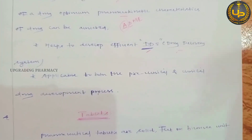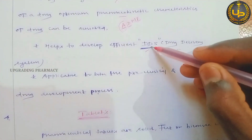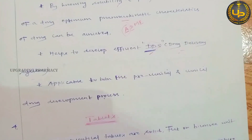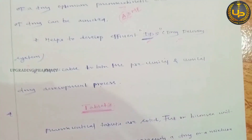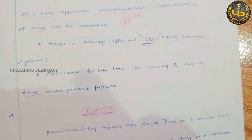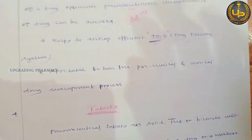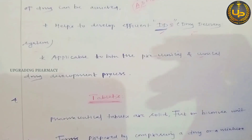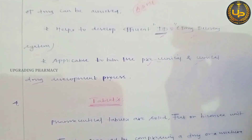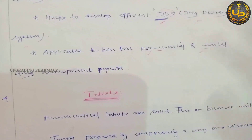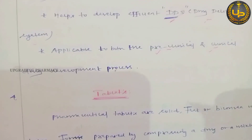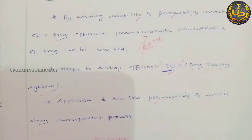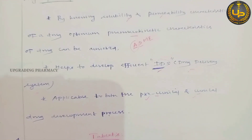BCS classification also helps to develop an efficient drug delivery system (DDS) — a system that delivers the drug in the required manner. The solvent used in the DDS can be determined based on the solubility of the particular drug. Additionally, BCS classification is applicable to both preclinical and clinical drug development processes, providing higher solubility and permeability information.